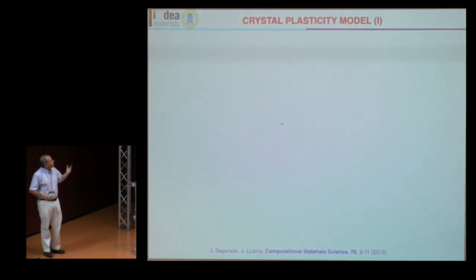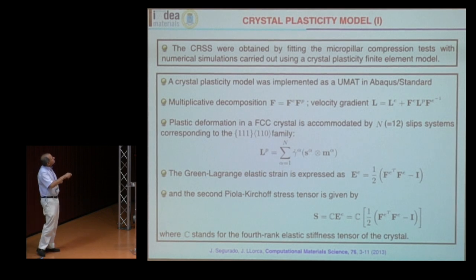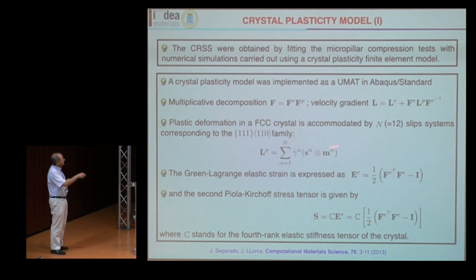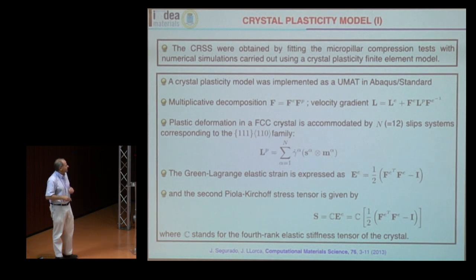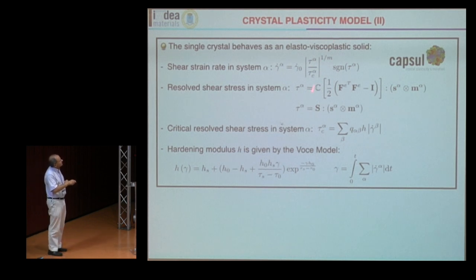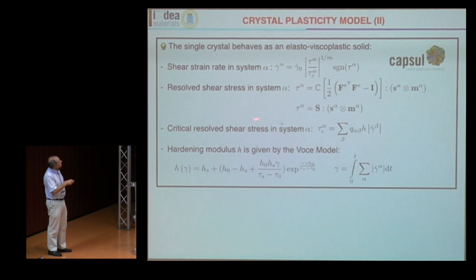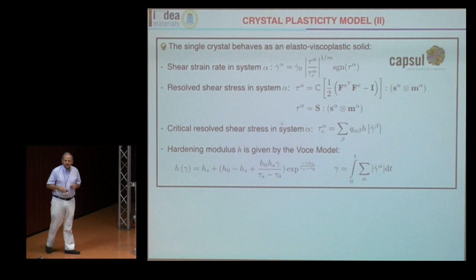Then we use a crystal plasticity model — a purely phenomenological one. It uses multiplicative decomposition with plastic deformation accommodated by 12 FCC slip systems. This is a power-law elasto-viscoplastic solid where τ_α is the resolved shear stress on the α system, τ_α^c is the critical resolved shear stress, and γ-dot is the shear strain rate. The critical resolved shear stress is governed by a hardening law with hardening modulus H given by Voce's model, and Q_{αβ} are the latent hardening parameters.